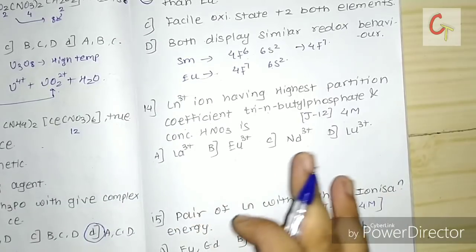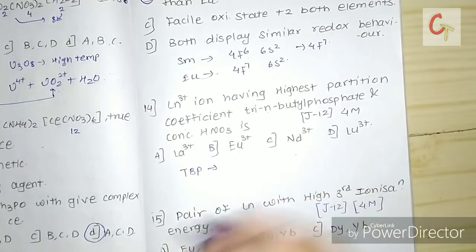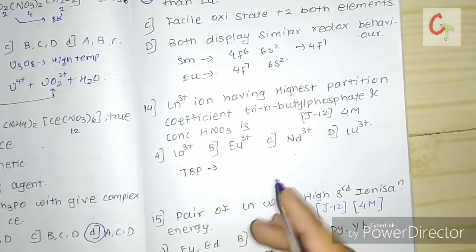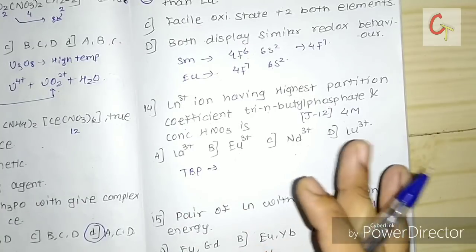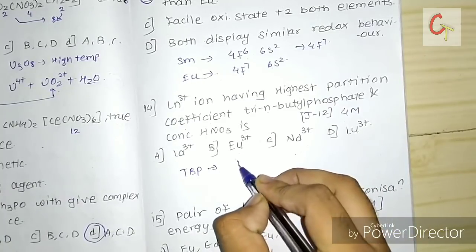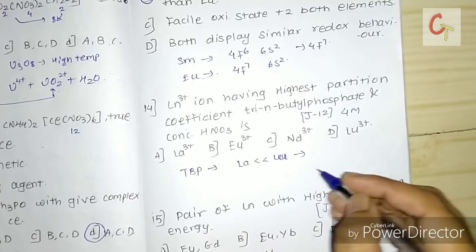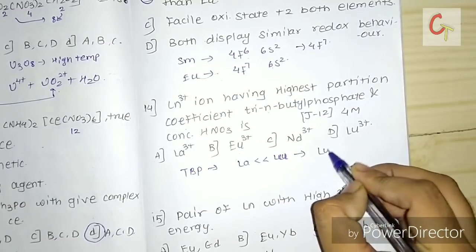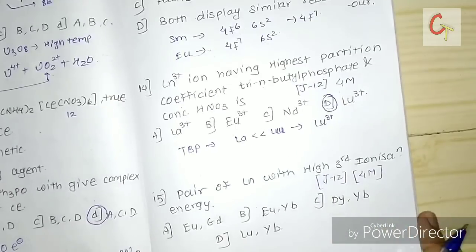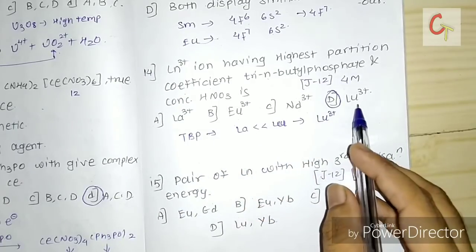Next: which lanthanide has the highest partition coefficient in tributyl phosphate (TBP) solvent extraction? In TBP solvent extraction, heavier lanthanides are extracted preferentially over lighter ones. As we go from lanthanum to lutetium, heavier lanthanides elute first. Therefore the answer is lutetium.